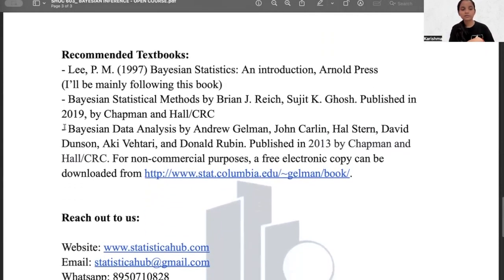These are the recommended textbooks of Bayesian inference. I'll be mainly following the book of Lee Peter Lee, which is Bayesian Statistics: An Introduction from Arnold Press. You can also look to the book, the second book, that is Reich and Ghosh. And the third book, I have also given the link of that book, so you can download it from here.